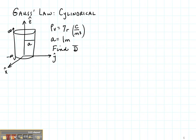Now let's talk about how to apply Gauss's Law in a cylindrical case. We're going to analyze a cylindrical charge distribution, ρ_V, that is 7R coulombs per meter cubed.